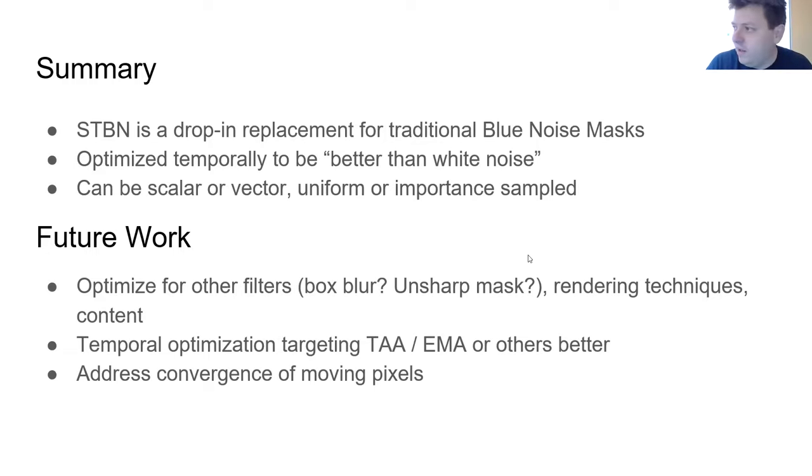And also I think it's important to try to address the convergence of moving pixels. And one idea we have for that is if multiple pixels are moving in the same direction because they're on the surface of an object, maybe we can make them migrate their sampling sequences all together so that they can keep the better convergence temporally while still having the same noise spatially. And so that's it. Thank you very much.